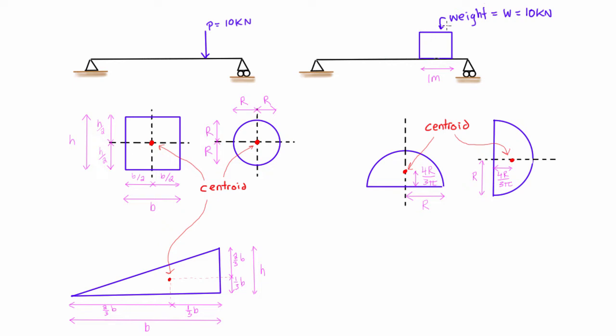So if we go back up to our beam here with the square on it, assuming the square is of uniform thickness and material, then the centroid of that square is going to be right in the middle and that will also be the center of mass.